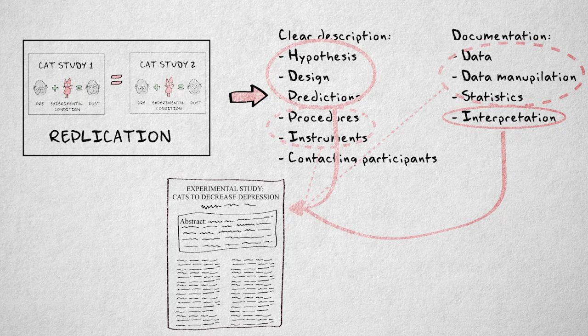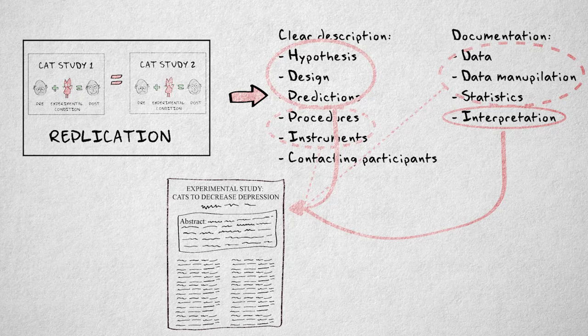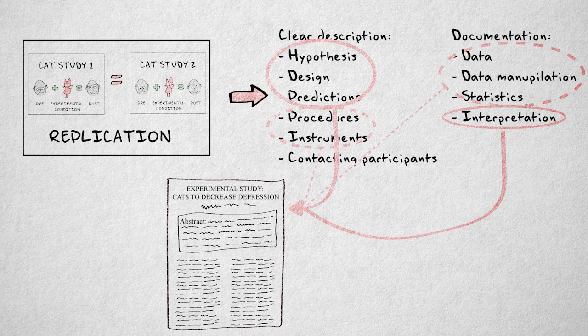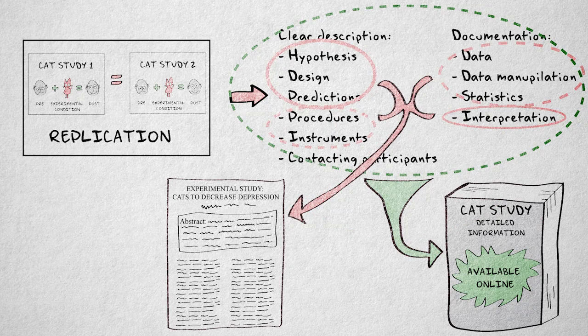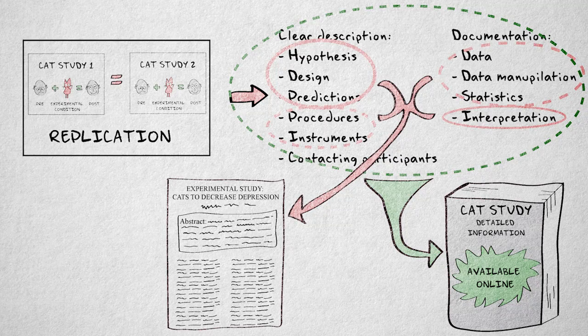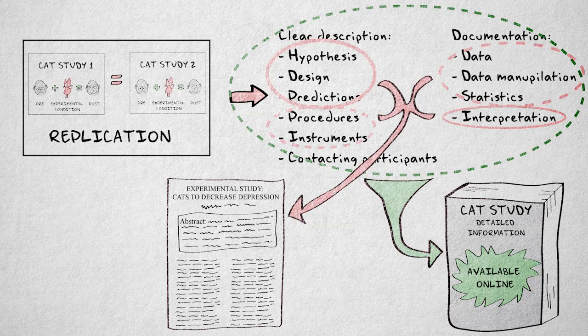Giving all the details simply takes up too much space. Most researchers just want to know a study's goal, setup, and outcome. However, the detailed information should be documented somewhere so it can be made available to those researchers who are interested in performing an exact replication.